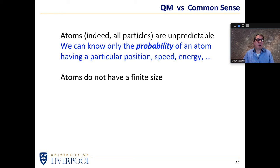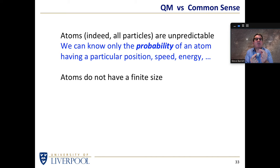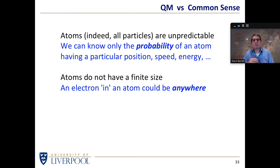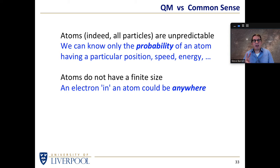Atoms don't have a finite size, even though we think of an atom as a small object. When you ask where you're likely to find an electron, the answer is you're most likely to find it quite close to the nucleus, but there's a small probability of finding it quite a long way away — and that probability never goes to zero. In quantum mechanics, an electron in an atom could actually be anywhere. There's a finite probability of an electron being one light year away from a nucleus — and that is completely against the common sense most people would have.